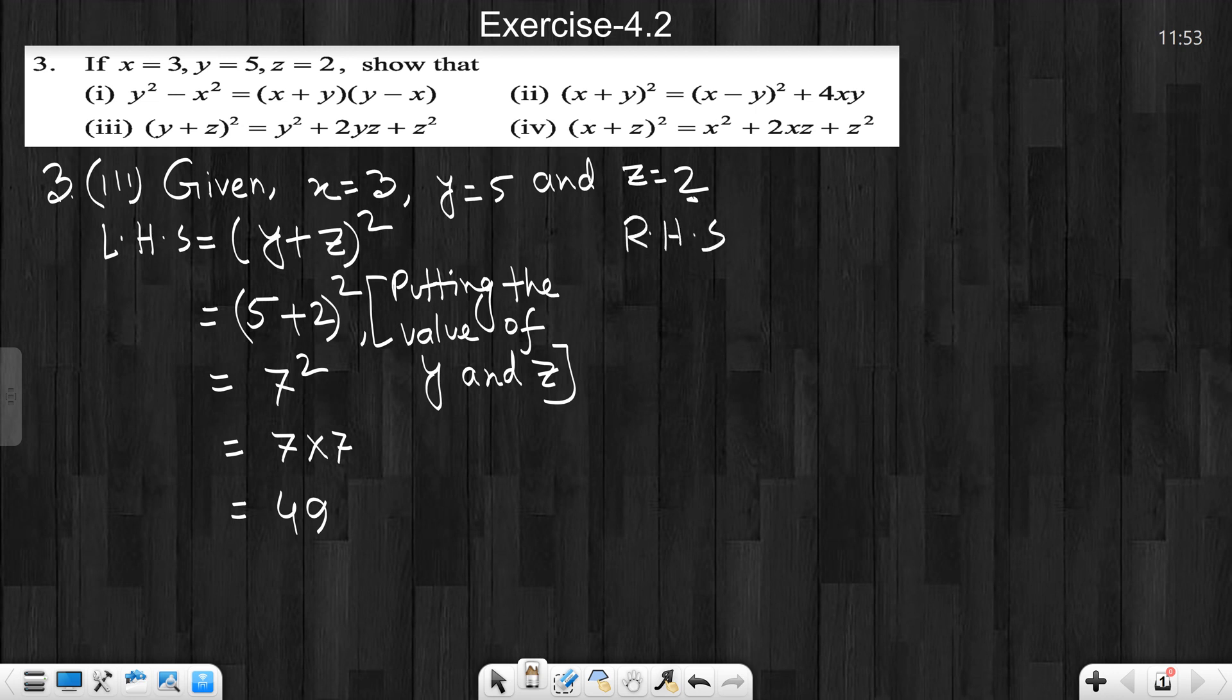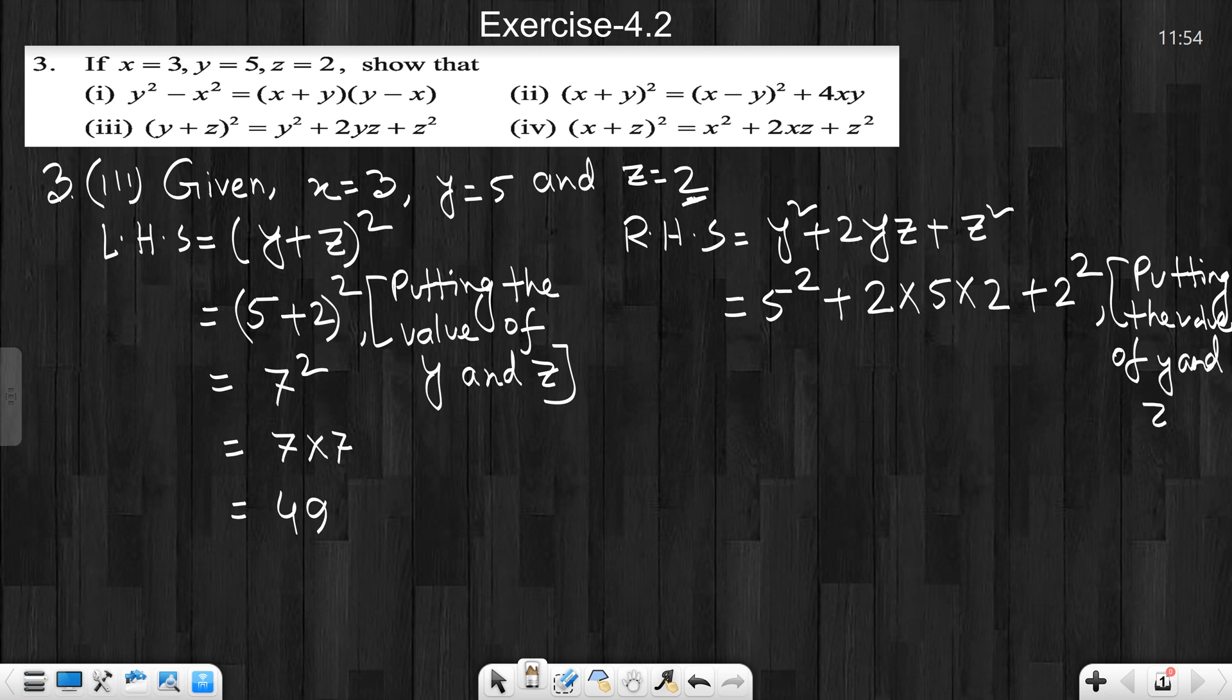Now right hand side. Right hand side is y square plus 2yz plus z square. y value is 5, so we write 5 square. Plus 2yz, y value is 5, z value is 2. So we write 2 multiply 5 multiply 2. Plus z, z value is 2, power is 2. We write putting the value of y and z.